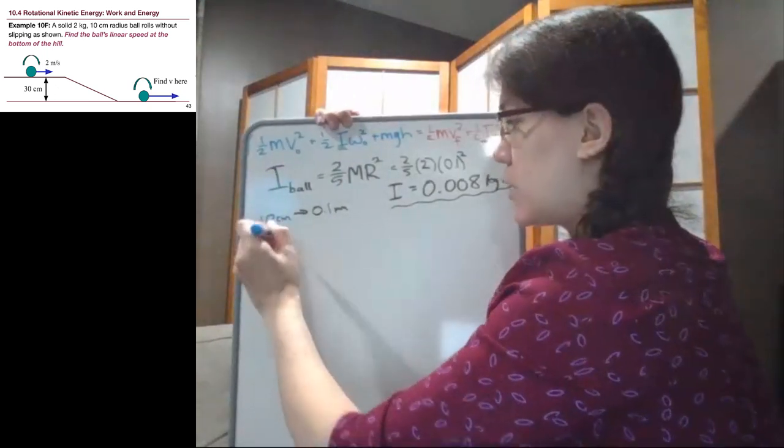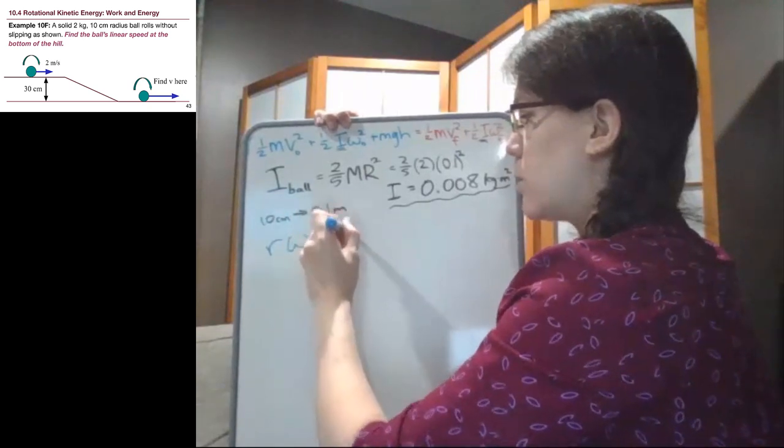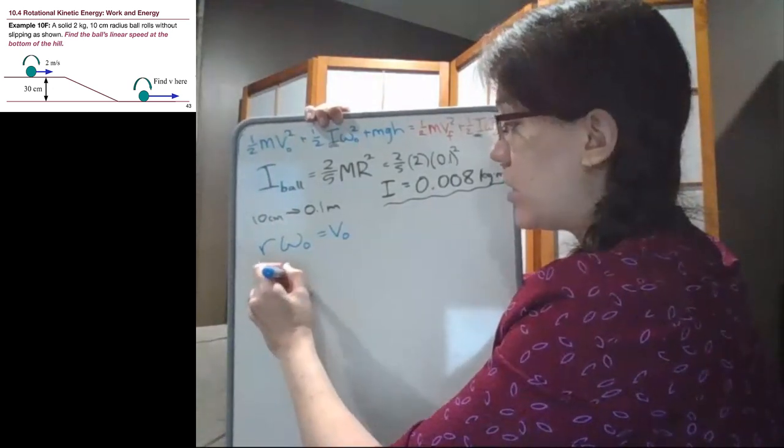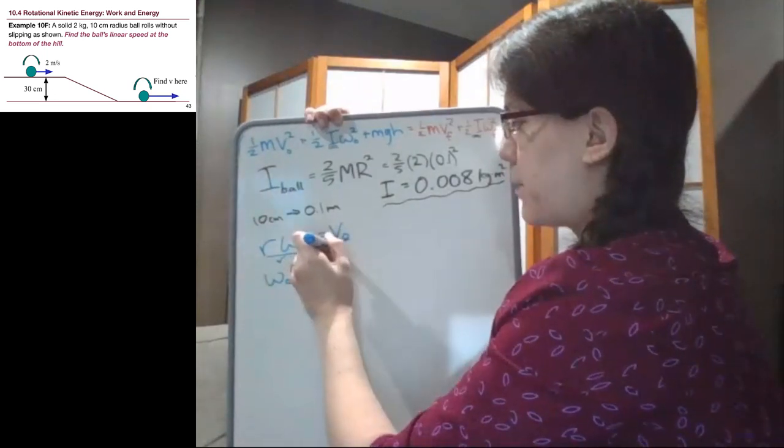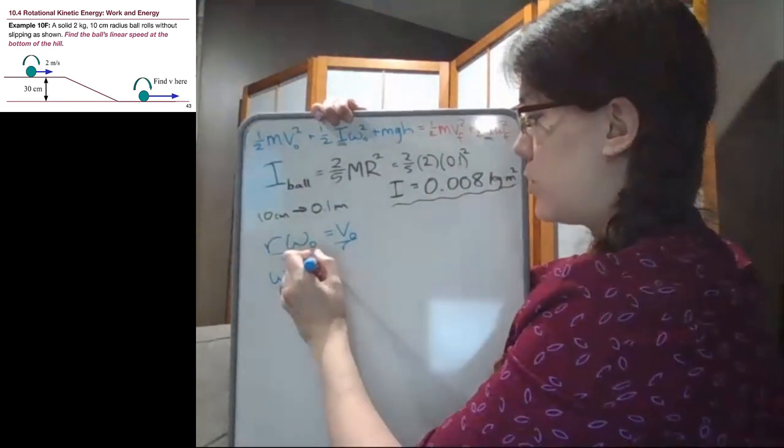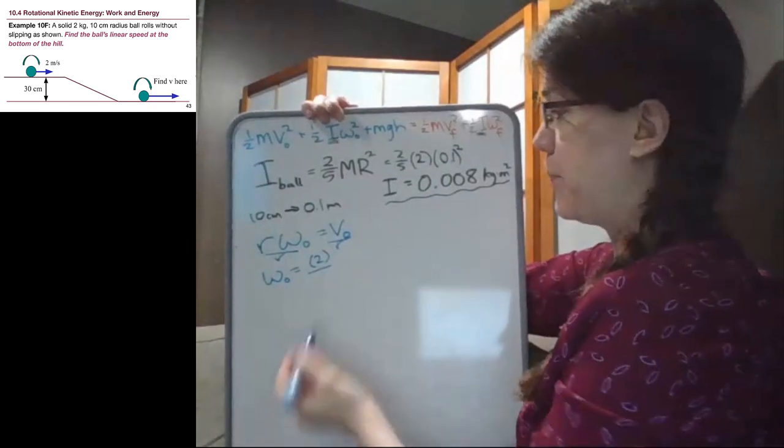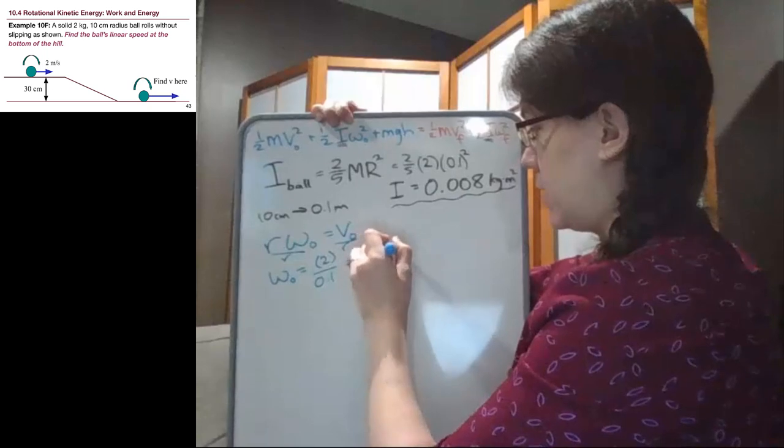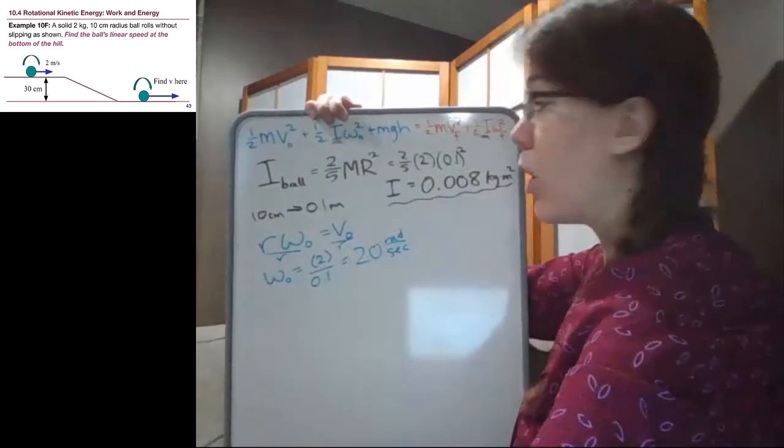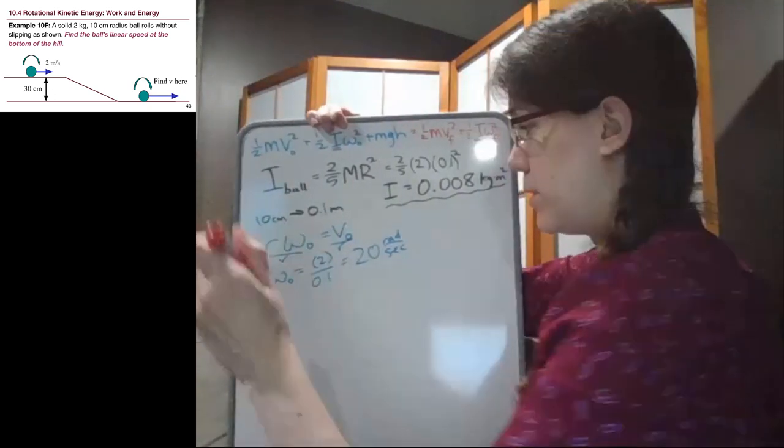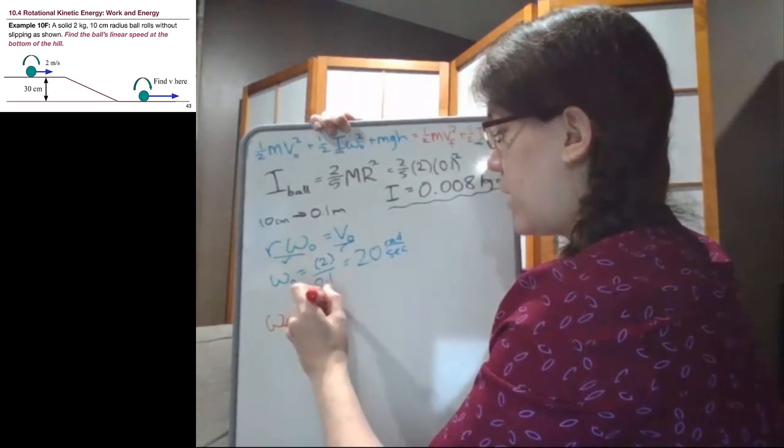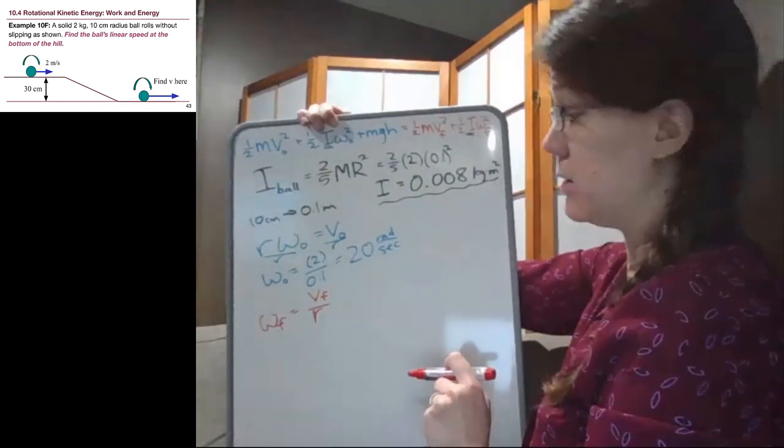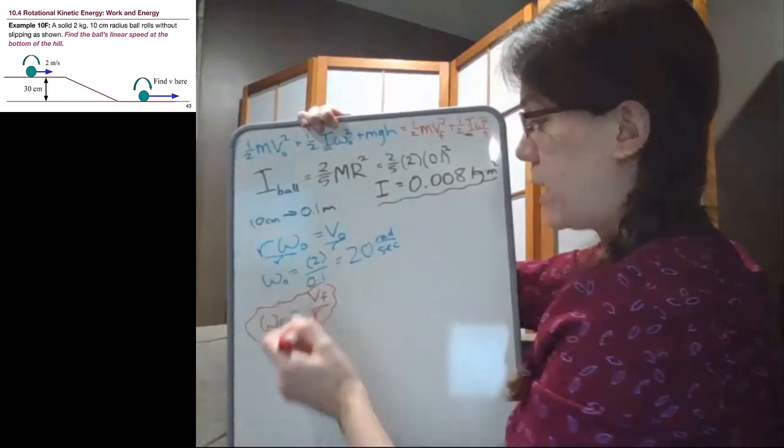The other thing to recognize is that at the start of the problem, r omega initial equals v initial. If we want to know the initial angular speed, we can divide both sides by r. The initial linear speed is 2 meters per second, and the radius is 0.1, so we have 20 radians per second. For the final angular velocity, we can write that as v final over r.